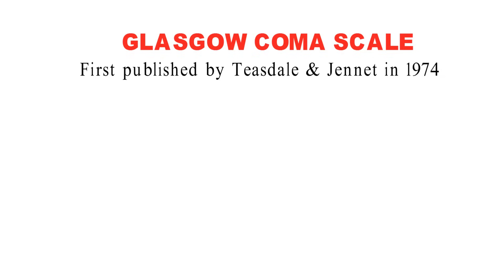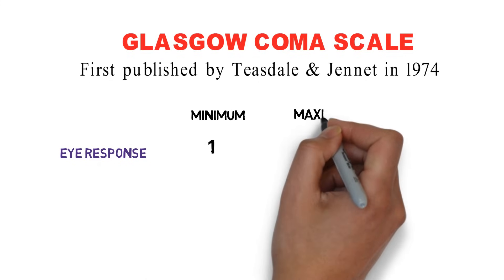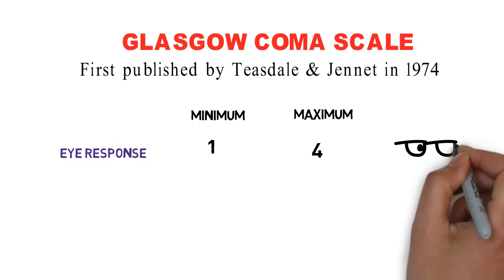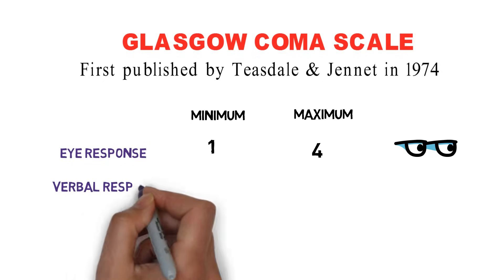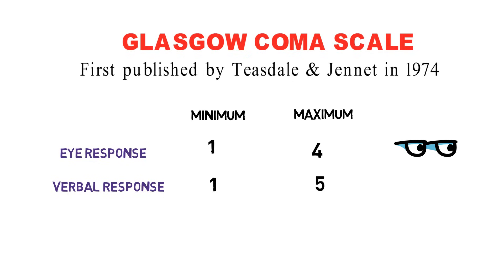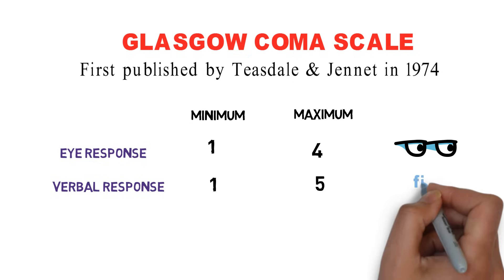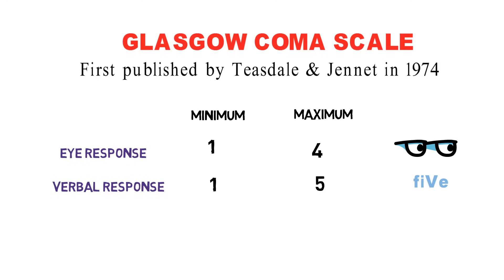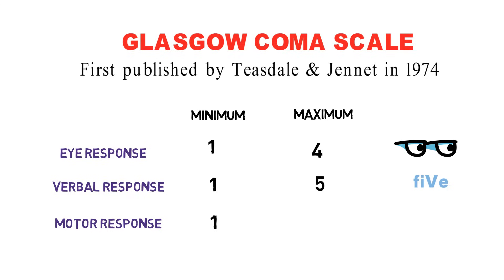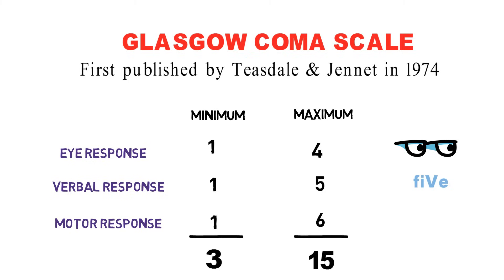It is divided into three categories. First is eye response, with a minimum score of 1 and maximum score of 4 — you can memorize the maximum score by picturing eyes with spectacles. Second is verbal response, with minimum 1 and maximum 5; since 5 has a V in it, that stands for verbal. Last is motor response, with minimum 1 and maximum 6. So the minimum GCS score is 3 and maximum is 15.